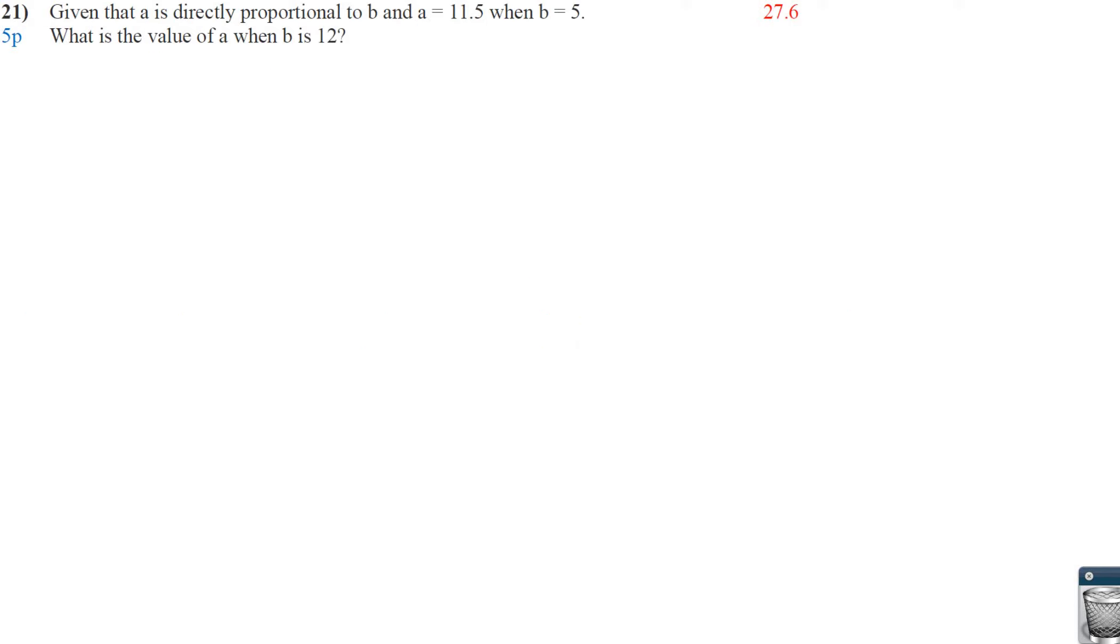Number 21, directionally proportional. So here, that means a equals some constant times b. That's directly proportional. Indirect, or inverse. Yes, indirectly is where you're going to be dividing. So a equals k over b. So know those tricks.